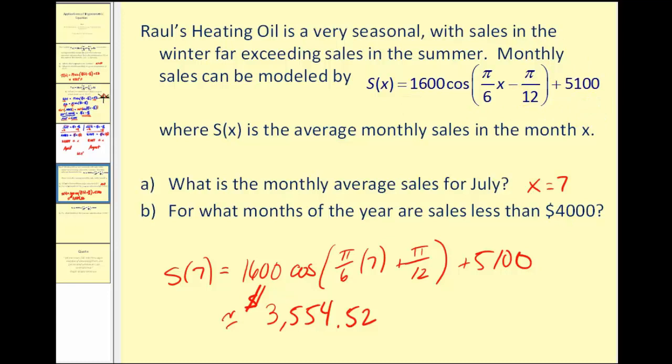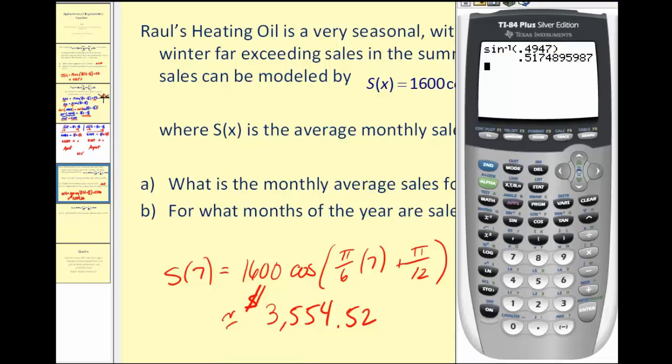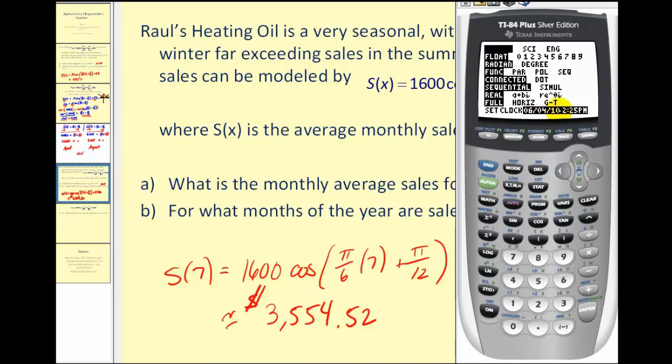Let's get our graphing calculators out. Make sure we're in radian mode. Next, let's set up the window so we get a nice view. I've already set it up nicely. X goes from negative one to thirteen by one. Remember, x is the month. Y is the dollar value of sales, and I set it up from negative two hundred to eight thousand. I like to show negative values here so we can see the origin on the coordinate plane. And we'll go by five hundredths.